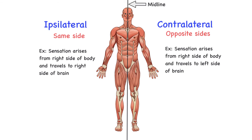We can also see this in cases of stroke. There could be a stroke in a particular portion of the brain. If the stroke is on the left side and the symptoms are also on the left side of the body, then it's ipsilateral. But if the symptoms are on the right side of the body and the stroke originated in the left side of the brain, then that is considered contralateral because the symptoms are showing on the opposite side.